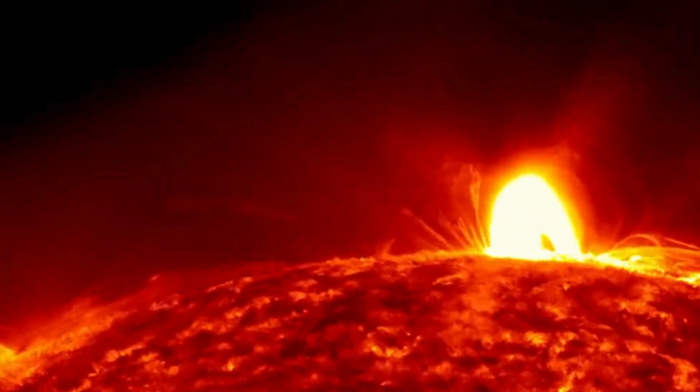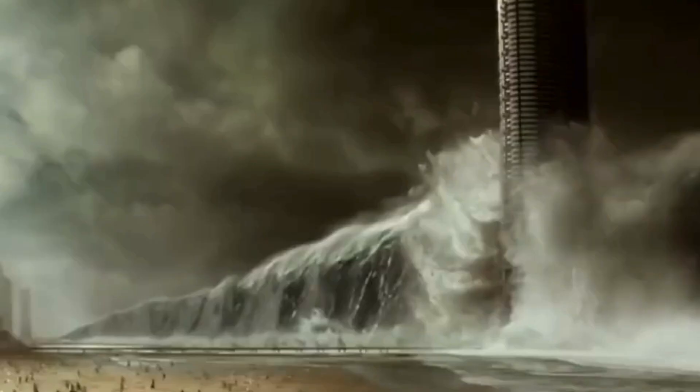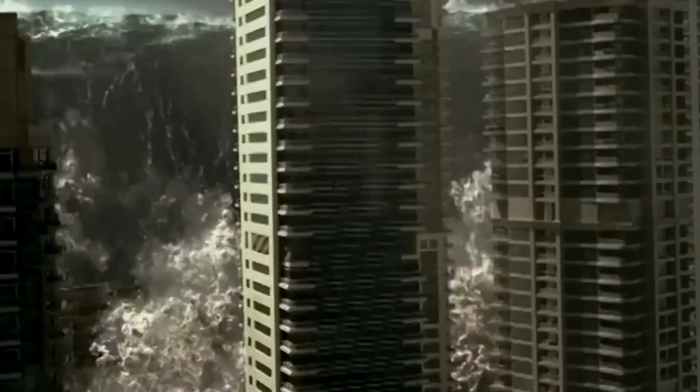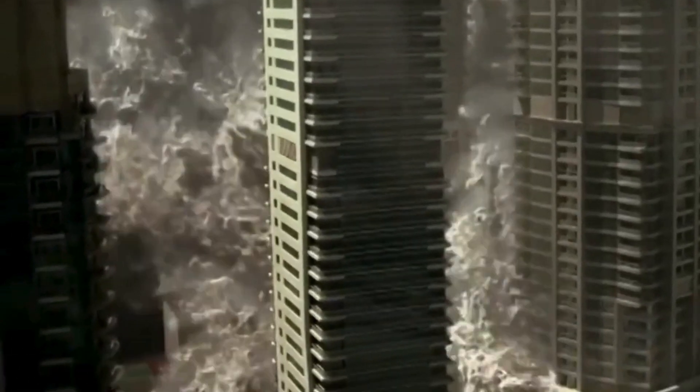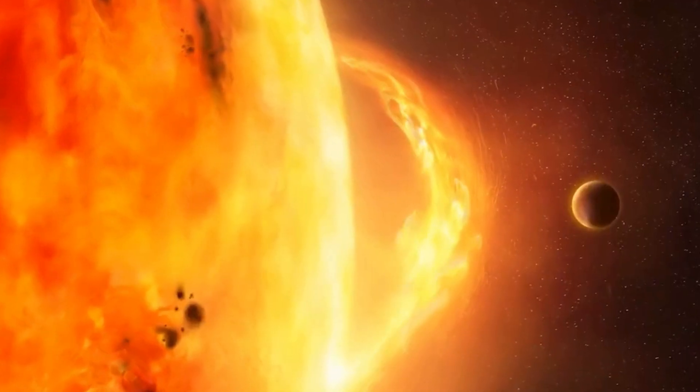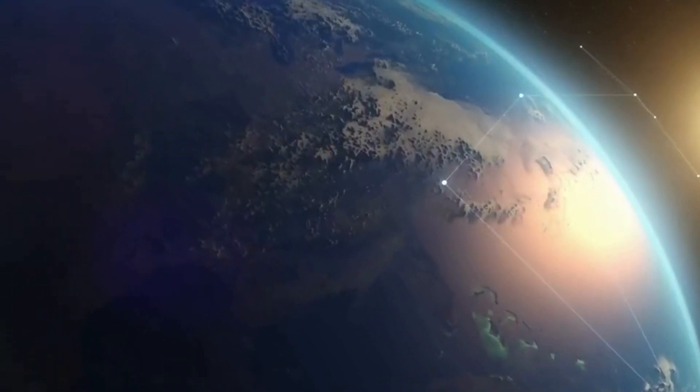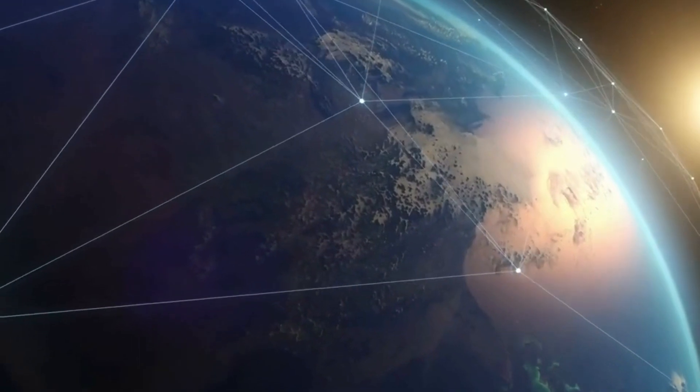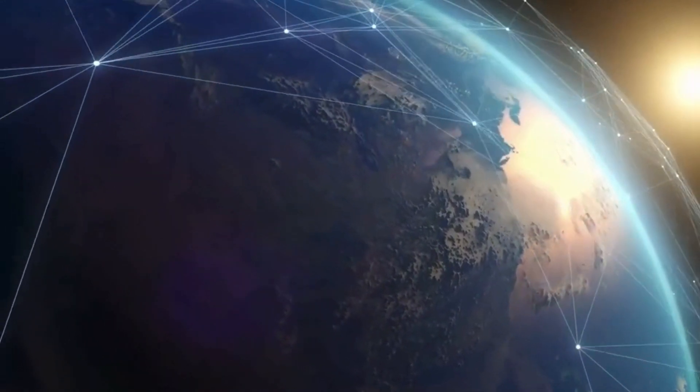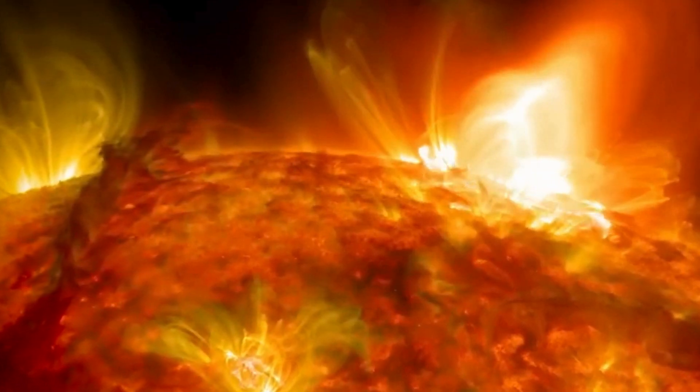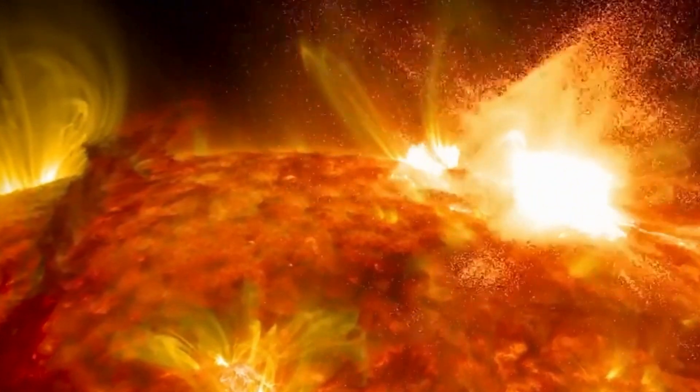But what if a supersolar flare collided with earth? Is it really possible for the human race to become extinct in the event of such an occurrence? When might another solar storm collide with earth? And is 2025 the year we could face a global power and internet outage? And most importantly, why and how does a solar storm occur?